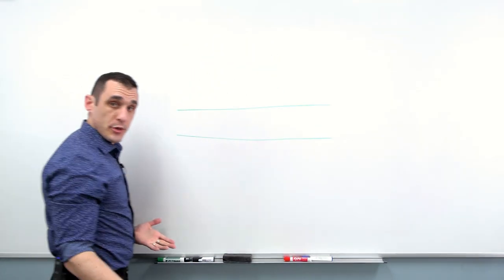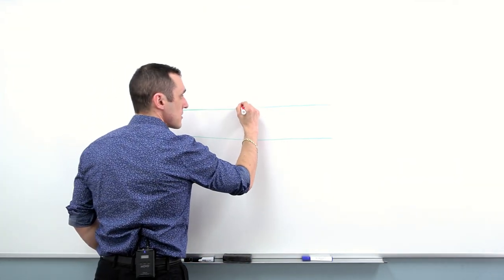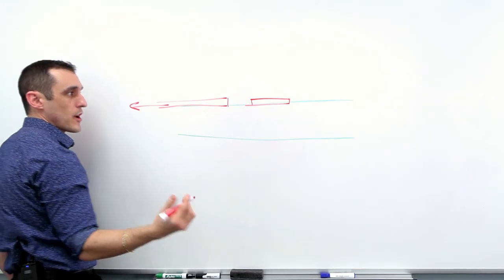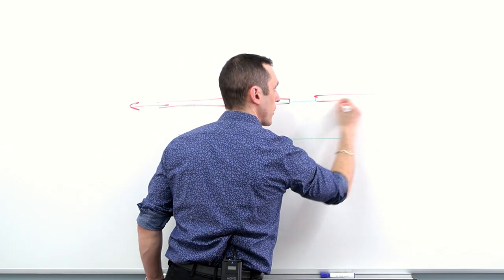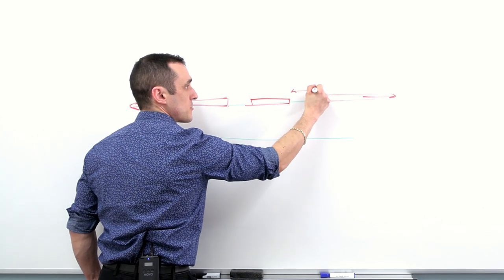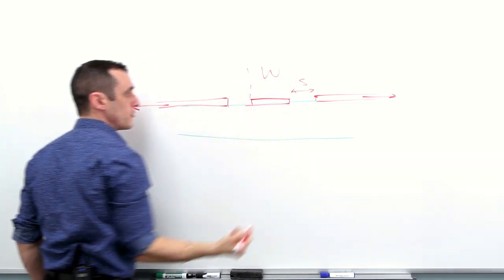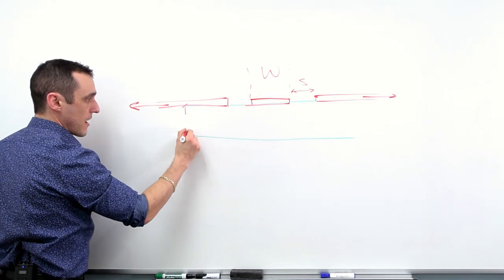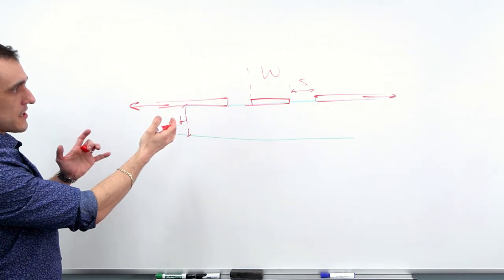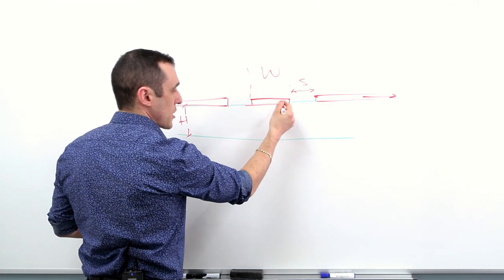Coplanar waveguides come in three possible varieties. So the first is where you have a trace and then you have some ground pour on the same layer, extending this way and over here, same ground pour extending this way. And then we have a specific spacing S, we have a width for our trace W, and then from here to here, we have some height above the edge of the substrate.